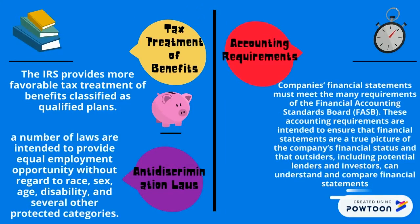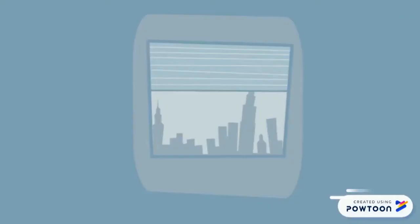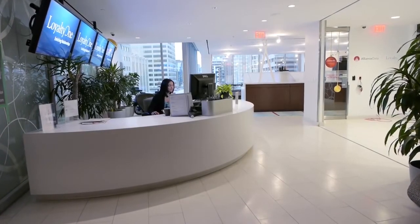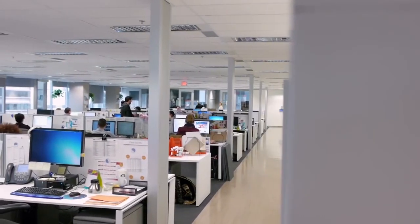Accounting requirements: company financial statements must meet the requirements of the Financial Accounting Standards Board (FASB). These requirements ensure that financial statements are a true picture of a company's financial status, and that outsiders including potential lenders and investors can understand and compare financial statements. Organizations must communicate benefit information to employees so they appreciate the value of their benefits.